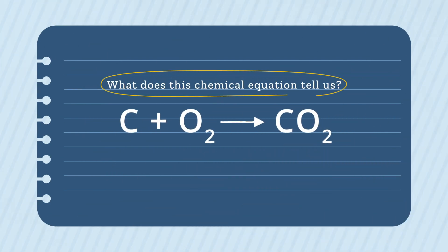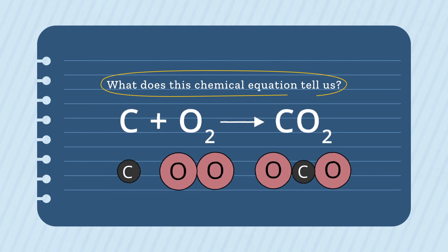What does this chemical equation tell us? This equation shows that carbon atoms react with oxygen atoms to make a compound that contains one carbon atom to every two oxygen atoms. This compound with the formula CO2 is called carbon dioxide.